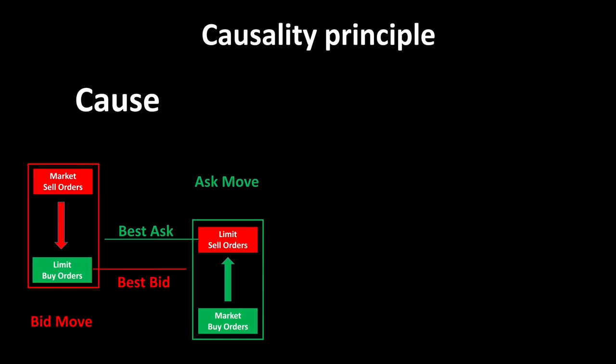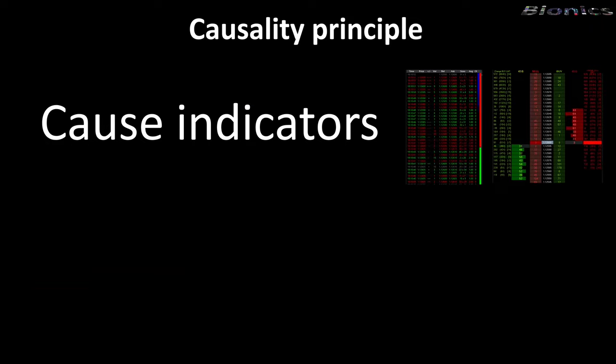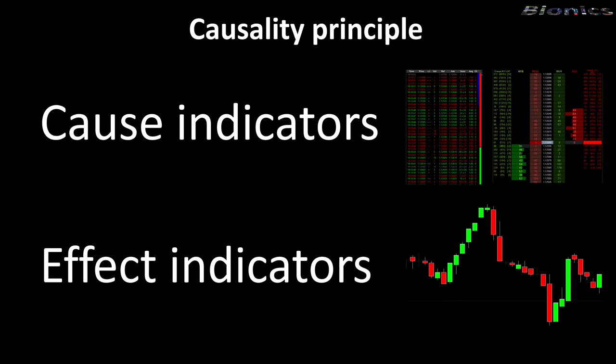The time and sales list and the DOM also provide various indicators that are calculated from bid and ask. I would like to come back briefly to the principle of causality. The only cause for a price movement is the fact that the market orders run into the limit orders. This is followed by the price information from which the candle is ultimately formed. This means that the price is the result of the bid and ask.